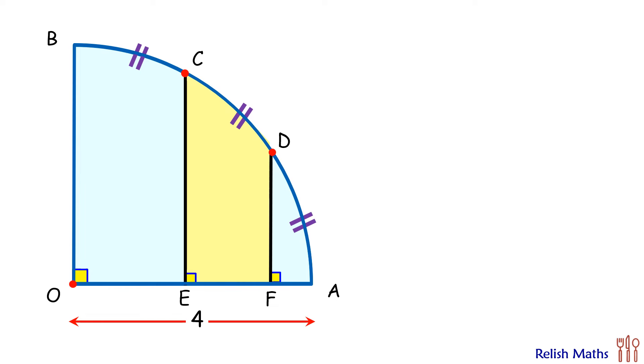Let's check the solution. For this we are joining OD and joining OC. Both are radius of the circle and will be 4 cm each.